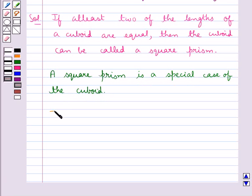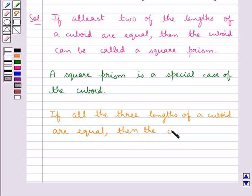If all the three lengths of a cuboid are equal, then the cuboid can be called a cube.